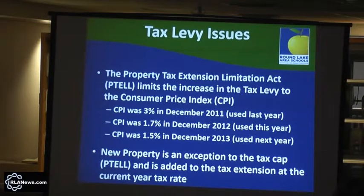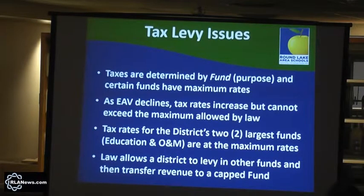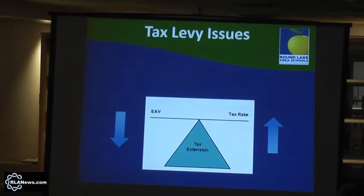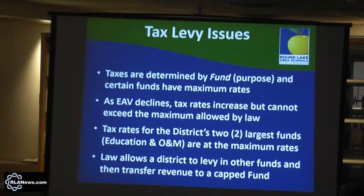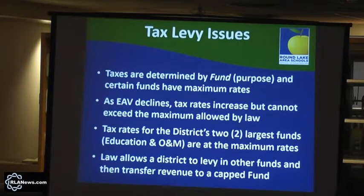New property is added on top of that, but in our situation it's very minimal. Now here's the issue we're facing and why we need to do a budget amendment. Taxes are determined by funds — we have the education fund, the O&M fund, and the debt service fund. As EAB declines, the tax rates increase. As we've shown you before, as EAB goes down, the tax rate normally goes up because your tax extension is divided by your EAB to get your tax rate. Two of our largest funds — the education fund and the O&M fund — are at their maximum rate because of the decline in EAB over the last four or five years. The law does allow a district to levy another fund and then transfer that to the capped fund, and that's essentially what we've done — that's why we need to do a budget amendment.